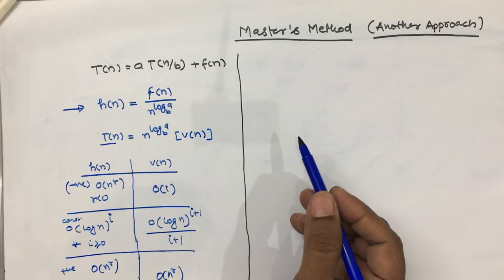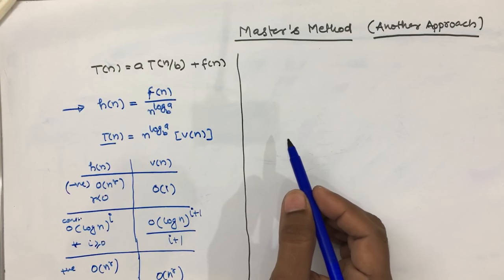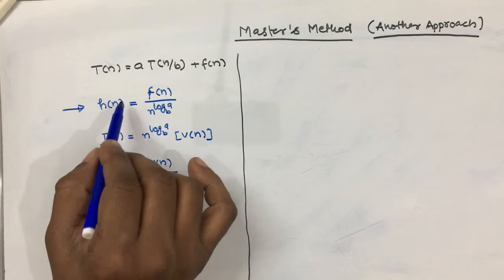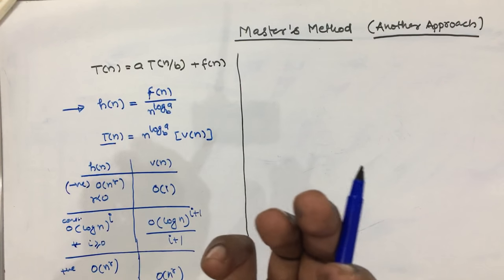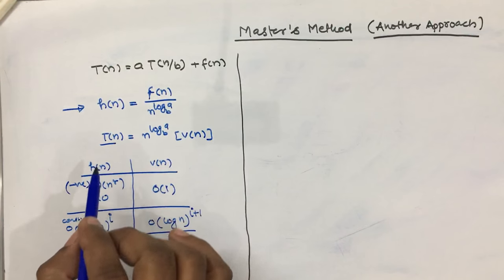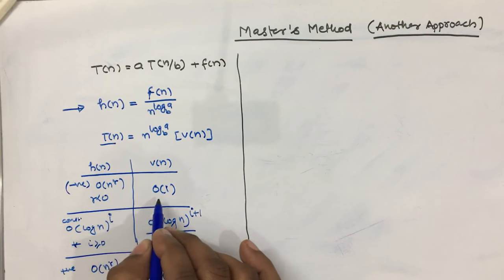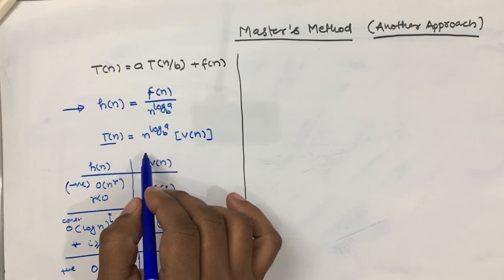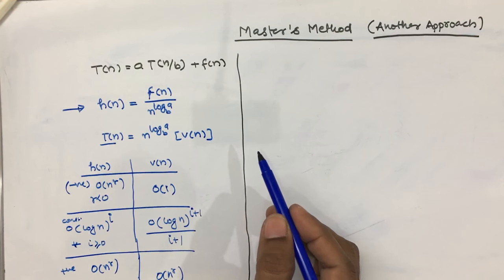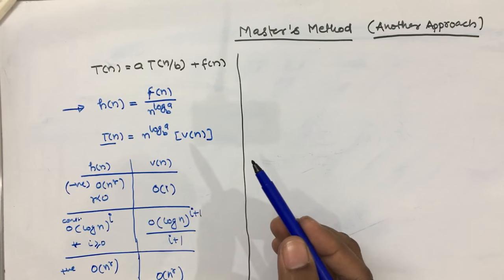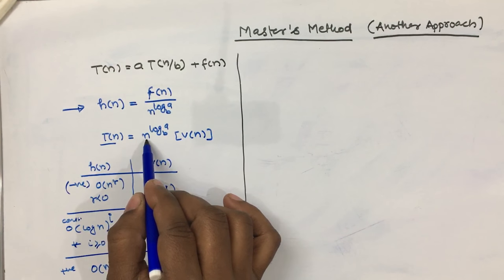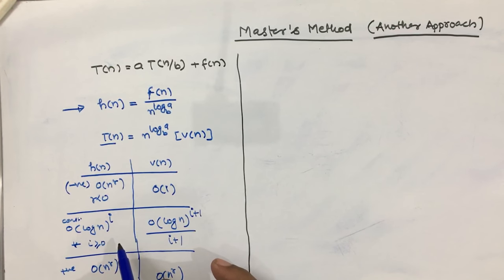In the standard Master Method, Case 1 says that if your function f grows polynomially slower than the factor n^(log_a b), we consider that case. Similarly in our table, if the value of h is negative — meaning f is slower — then the time complexity is order of n^(log_a b) times O(1), which matches Case 1 in Cormen: T(n) = Θ(n^(log_a b)).